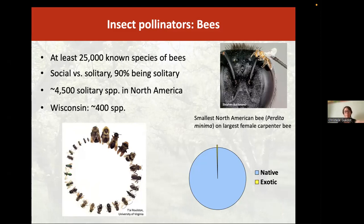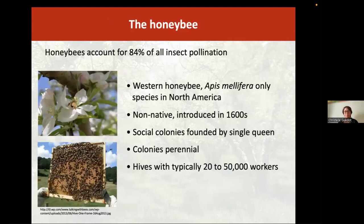There's a lot of diversity in bees—about 25,000 species. Most of them are solitary bees, and most are native bees. We have about 4,500 solitary bee species in North America, and about 400 in Wisconsin. Most states in the Midwest have similar numbers. Honeybees account for 84% of insect pollination because we have them as livestock and can place them wherever we need them to provide pollination services.